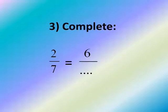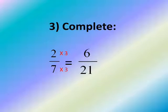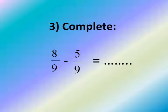Number 2: 2 over 7 equals 6 over what? We have 2 over 6. Then 2 multiplied by 3 equals 6, and 7 multiplied by 3 equals 21. You have 1 over 3. We need the numerator: 3 plus 3 in the numerator.